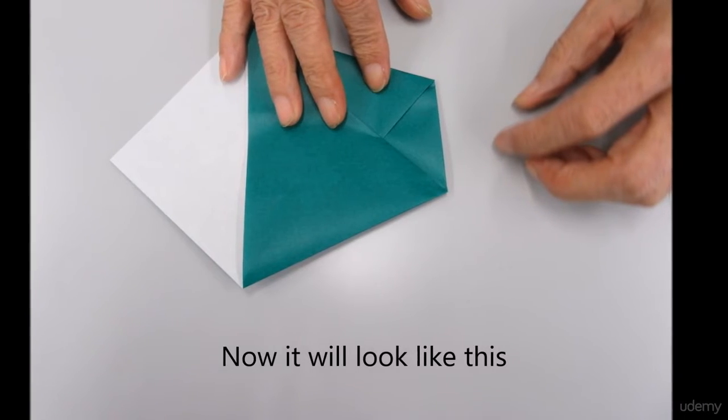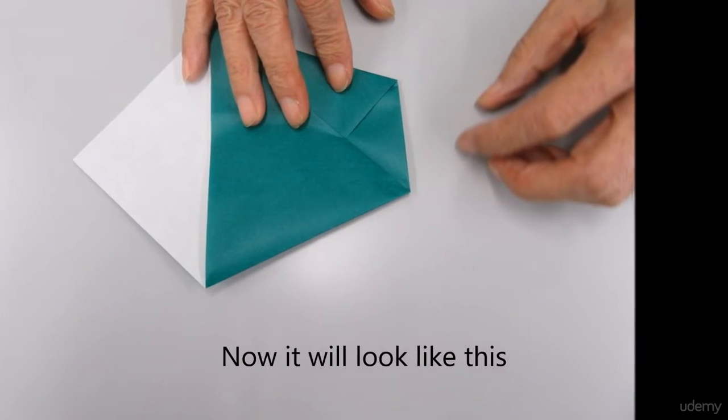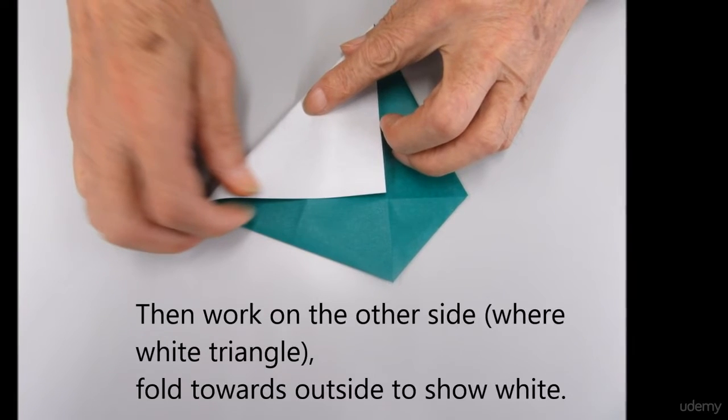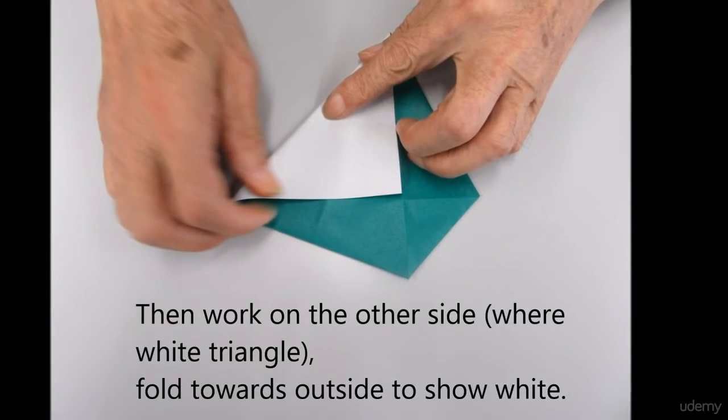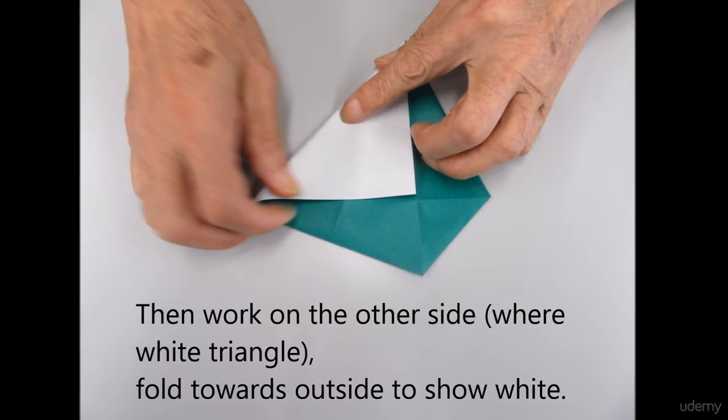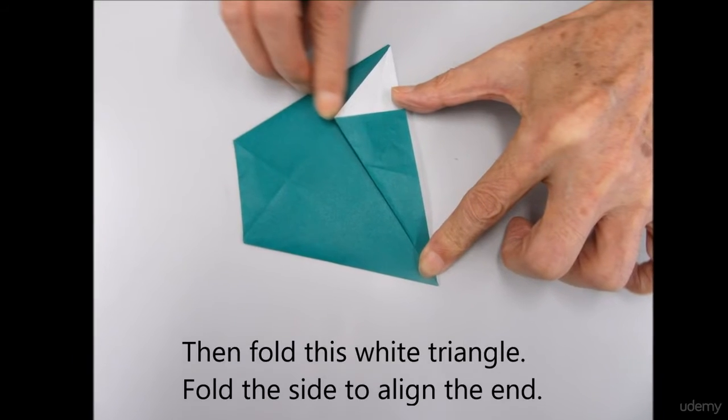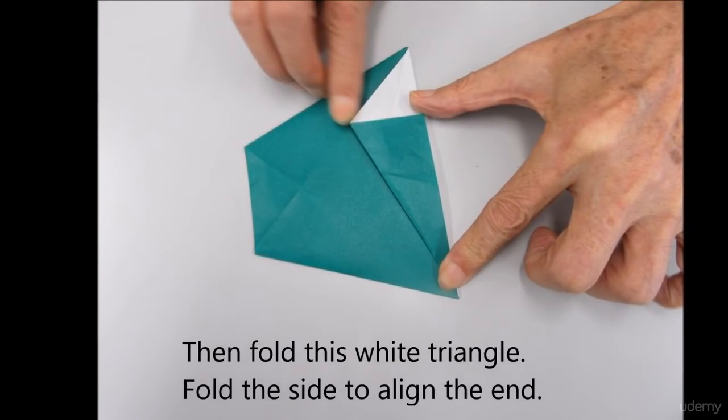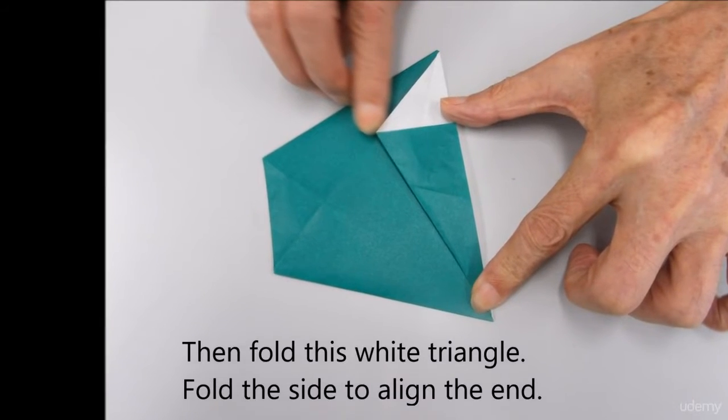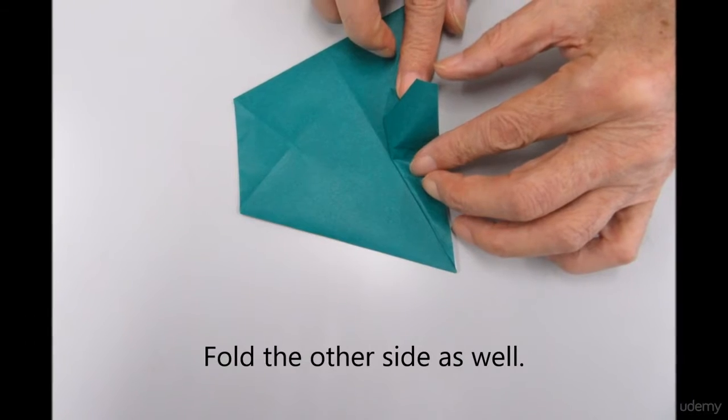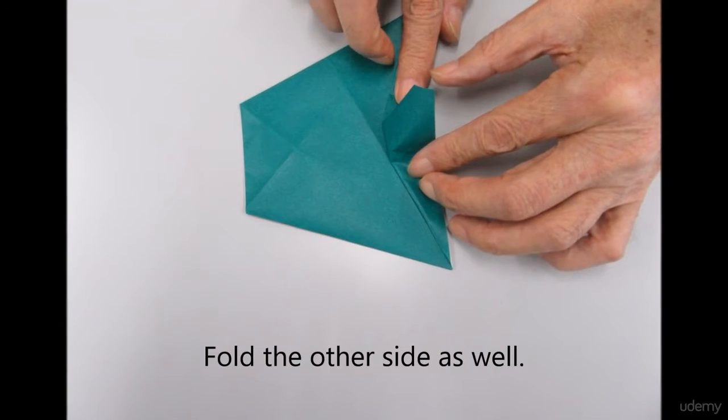Now what you have is this. Then work on the other side where white triangle fold was outside. Then fold this white triangle. Fold the other side as well.